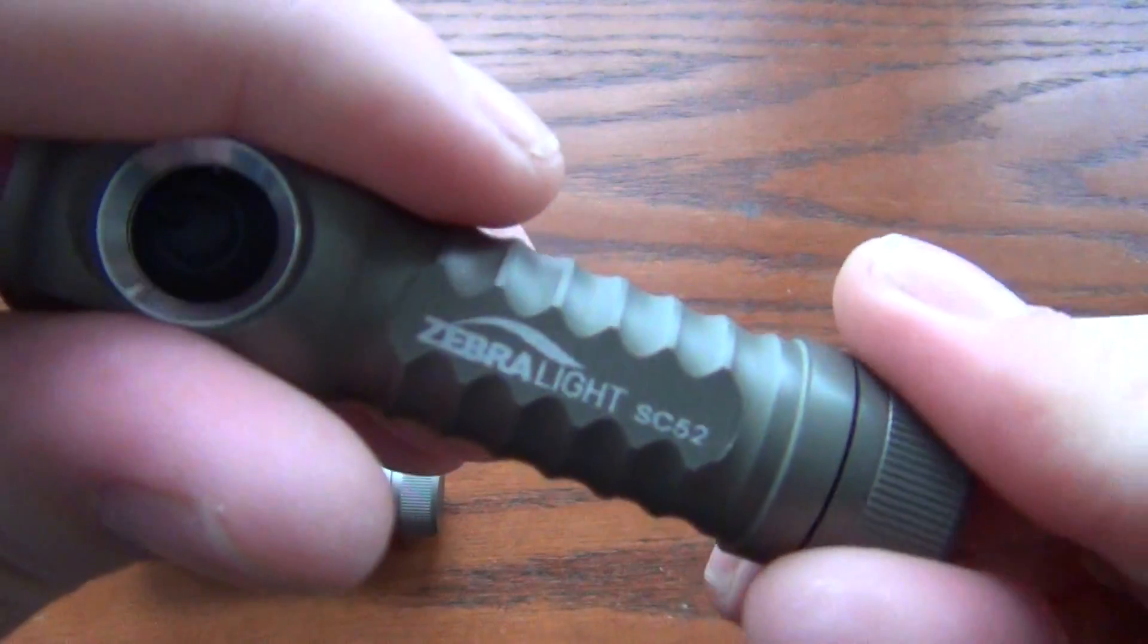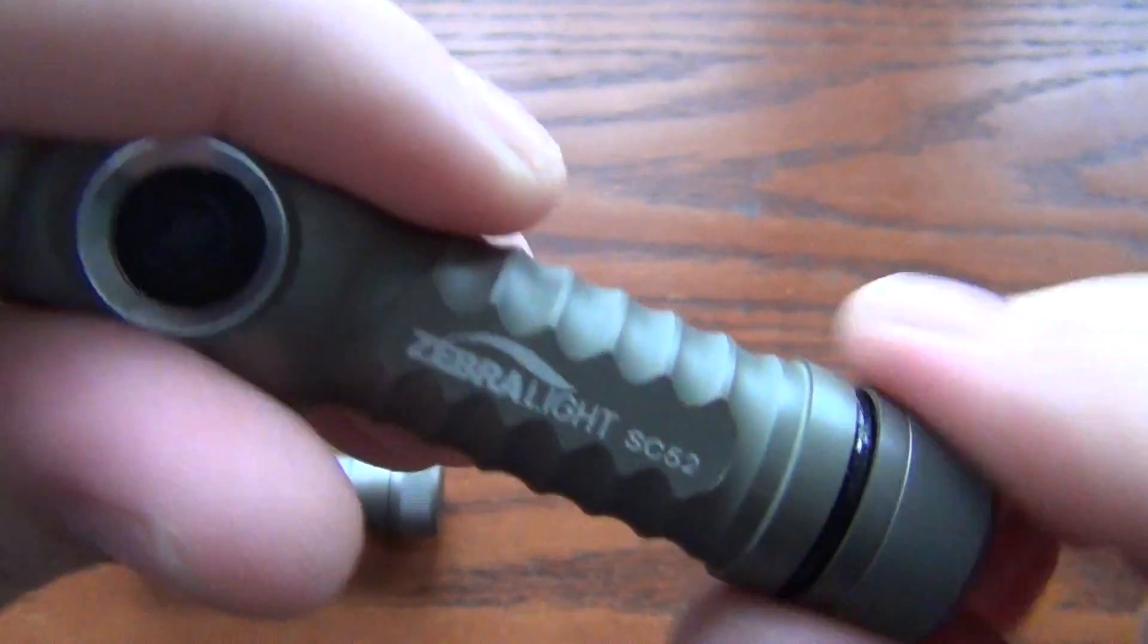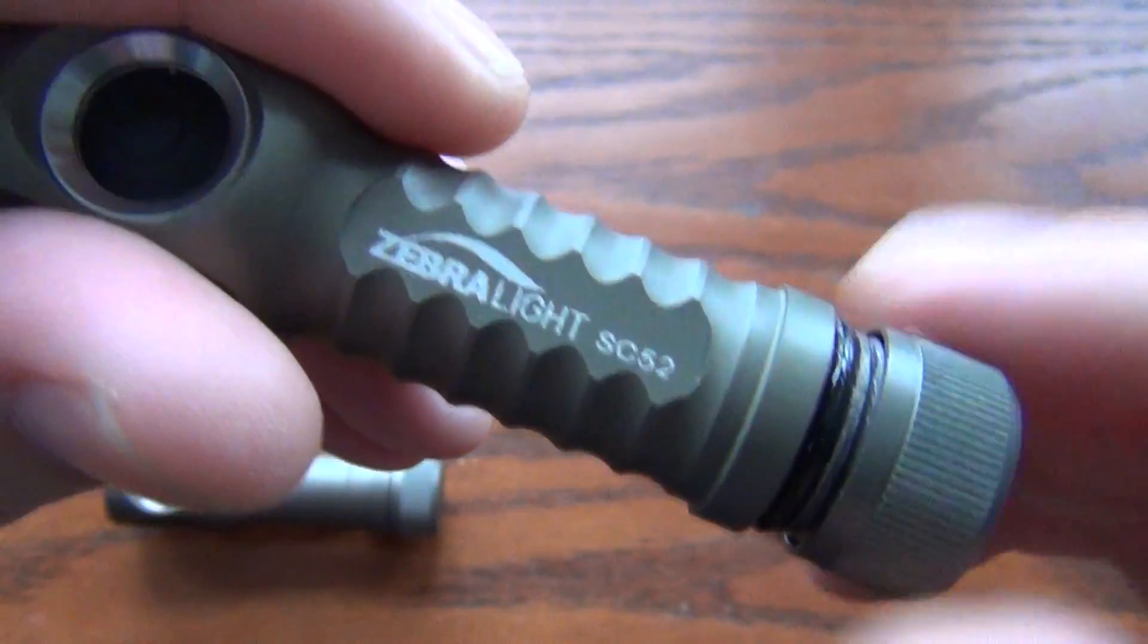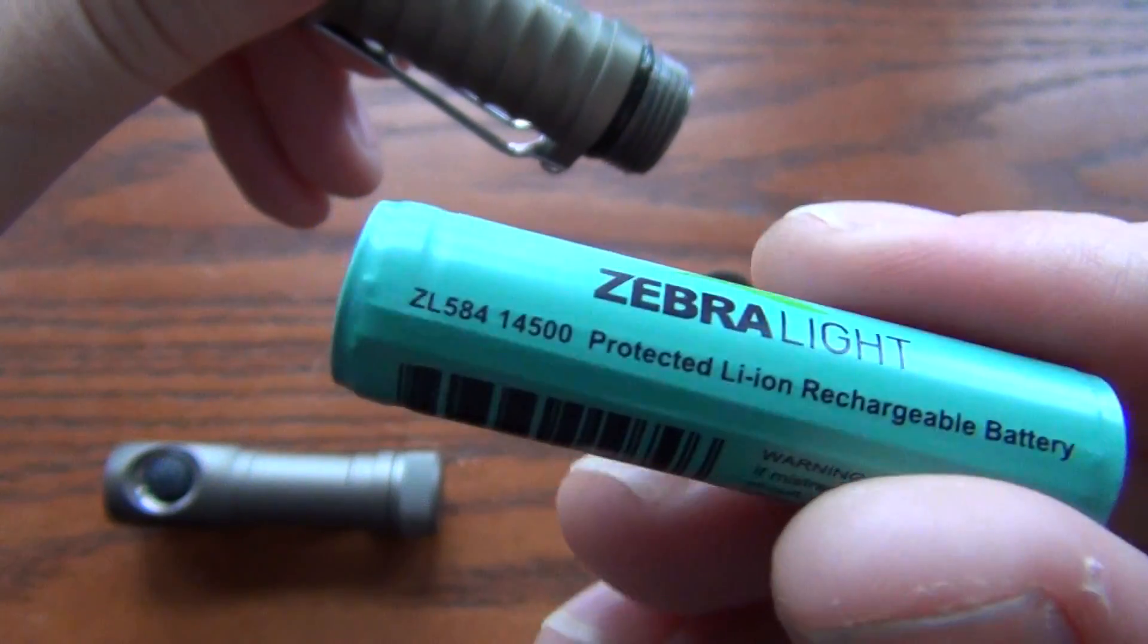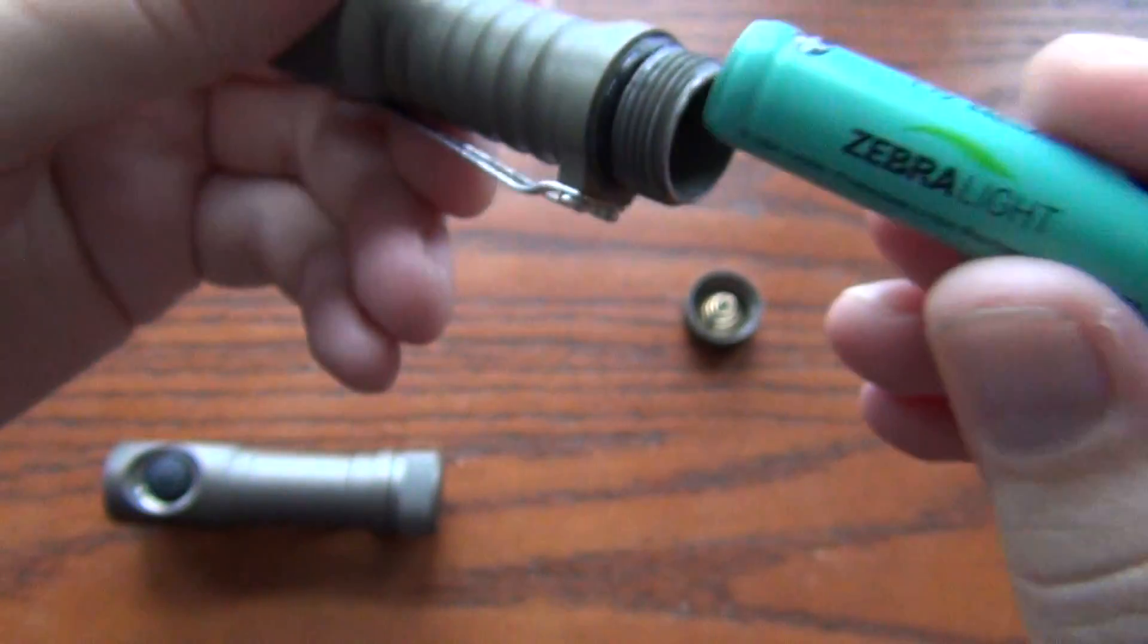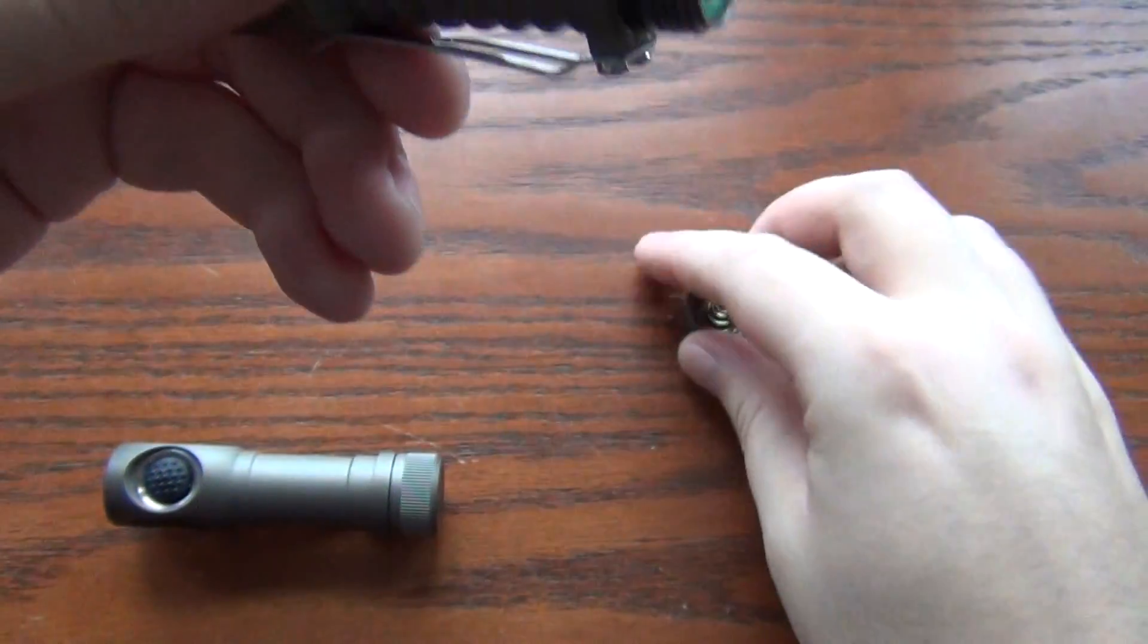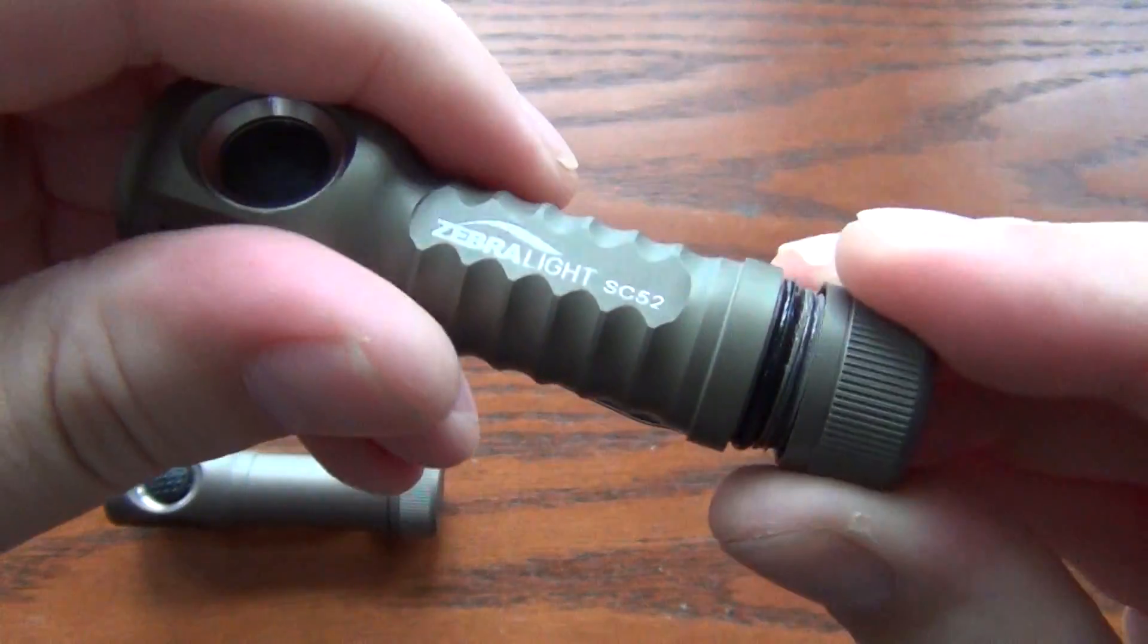Three main levels. You can tell that the bright is much brighter on the SC52. With a 14500 battery, which is a lithium ion battery, and which is what I have in here at this time. This is a Zebralight 14500 battery. This thing will put out 500 lumens.